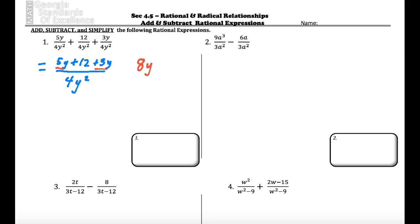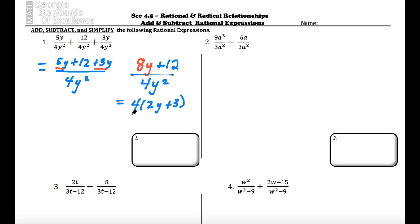5 plus 3 is 8, so we have 8y plus 12, all over 4y squared. Now we can apply factoring — 4 goes into both 8 and 12, so we're left with 2y plus 3, all over 4y squared. The 4s simplify out, and our final result is 2y plus 3 over y squared.